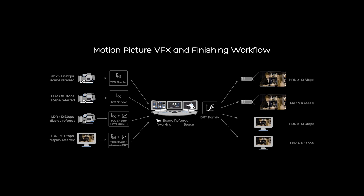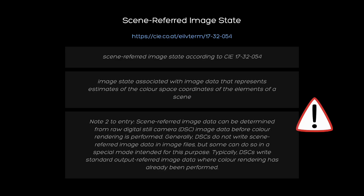Before we jump deeper, let's first see if there is an existing definition of scene-referred, and if so, whether the motion picture industry lives by those definitions. The CIE has defined scene-referred image state as follows: "Image state associated with image data that represents estimates of the color space coordinates of the elements of a scene." Note 2: scene-referred image data can be determined from raw digital still camera image data before color rendering is performed.